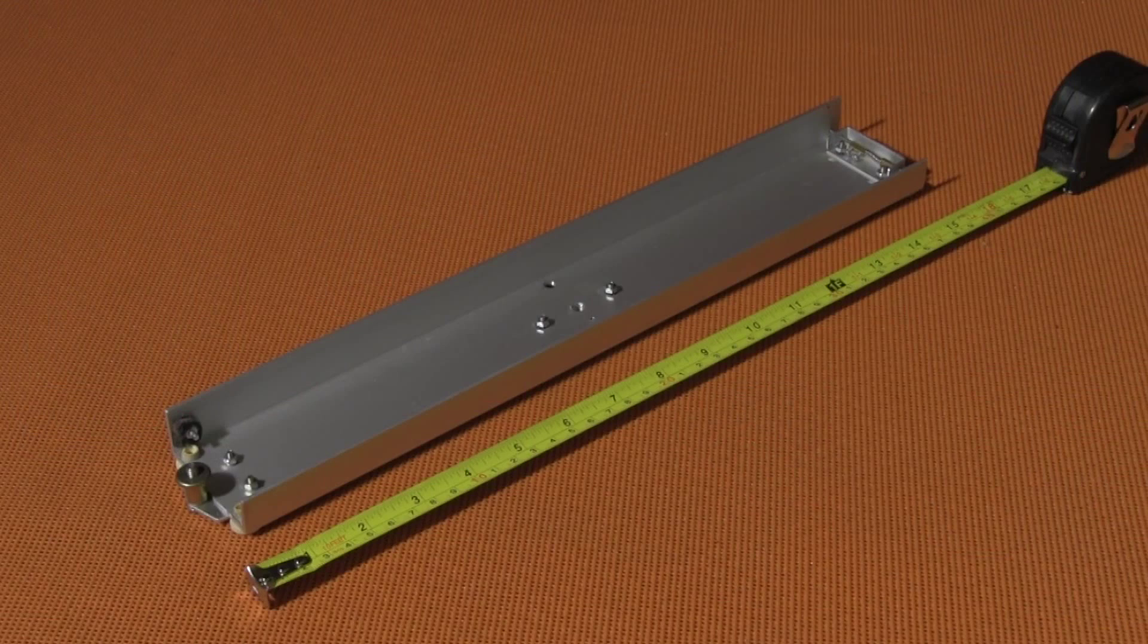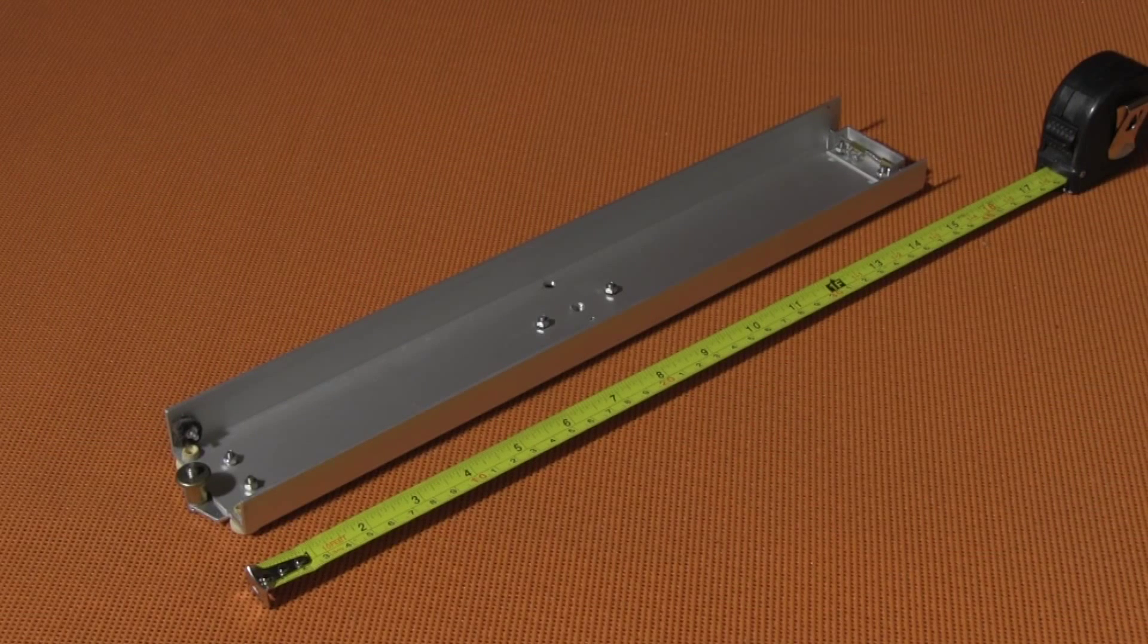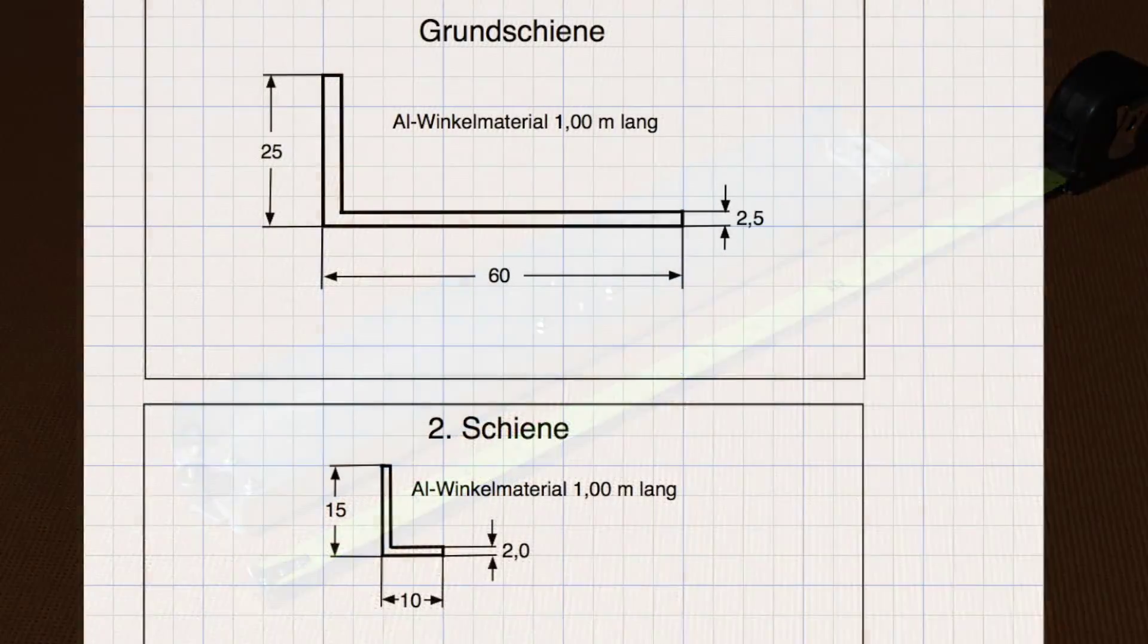Here I will introduce my solution, which is constructed out of a one meter aluminum angle rail with the dimensions 60 by 25 millimeters. This material is available in hardware stores.